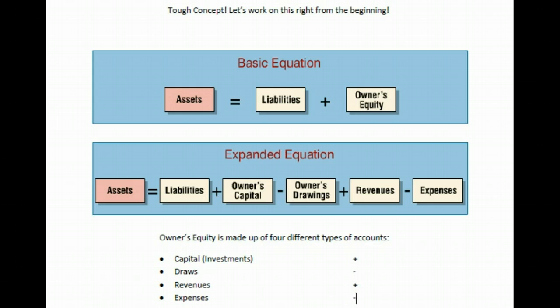So owner's equity has four different types of transactions that affect it. Two which have the nature of making it bigger—investments and revenues—and two which have the nature of making it smaller. As the Draws and Expense accounts get bigger, they make owner's equity smaller because they decrease it.